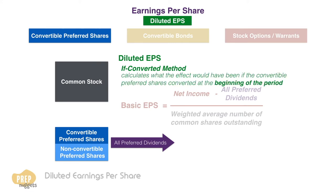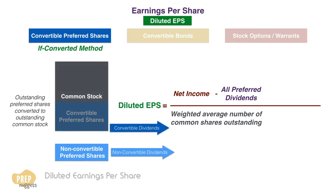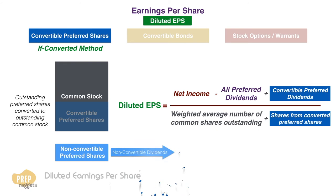The if-converted method calculates what the effect would have been if the convertible preferred shares converted at the beginning of the period. If the convertible shares had been converted, there would be two effects. First, the convertible preferred securities will no longer be outstanding — instead, additional common stock would be outstanding, and we need to add the new shares created to the denominator. Second, if such a conversion had taken place, the company would not have paid preferred dividends on the converted shares, so we need to add back this dividend amount as it would be available to common shareholders.